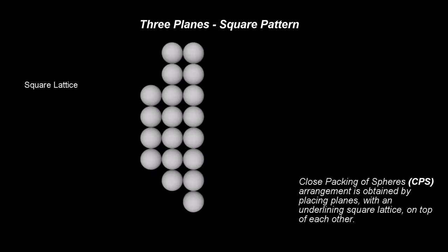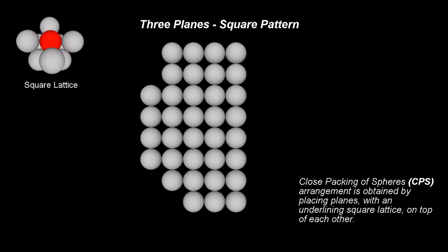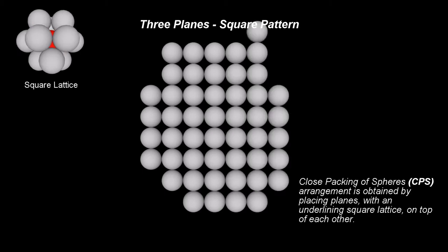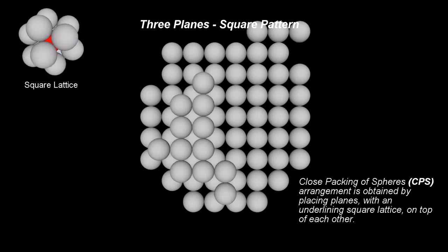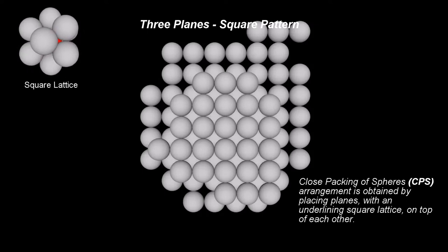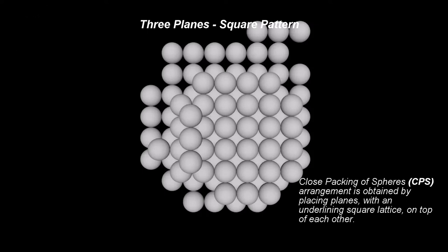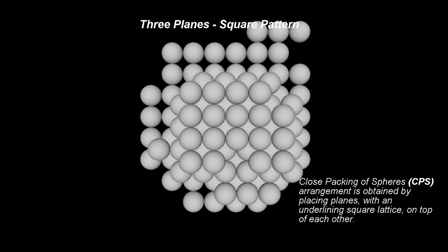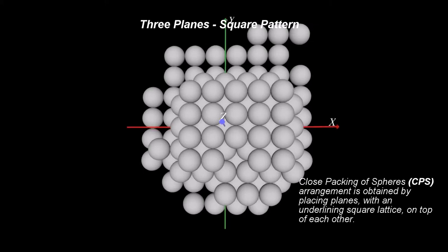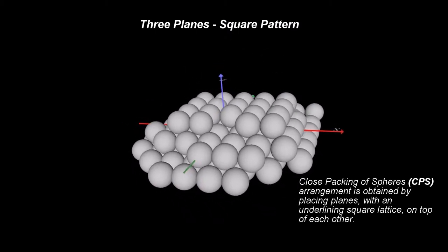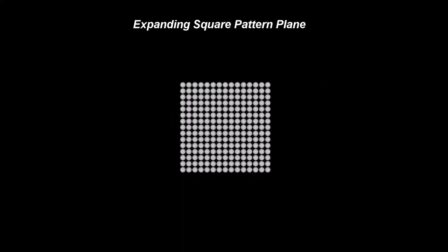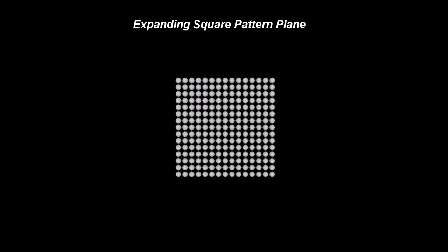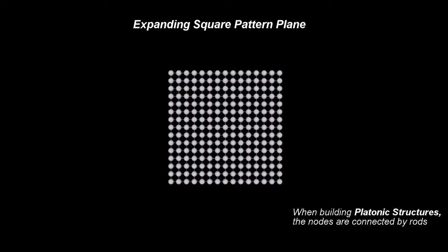Once you have filled up the first plane, you move to the next plane. The ping pong balls fit perfectly in the nests formed by the cluster of 4 balls from the first plane. The patterns of the two planes are identical; the second plane is translated relative to the first. For the third plane, the location of the balls is again determined by the nests of the second plane, and the third plane sits exactly above the first plane. Using the square pattern, each ping pong ball in the room will end up having exactly 12 neighbors.